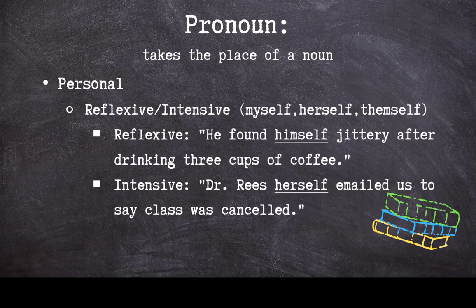Reflexive or intensive pronouns refer back to a noun that's come earlier in the sentence. These are created by adding 'self' or 'selves' to the end of the objective pronouns my, your, our, her, him, it, or them. Reflexive pronouns are used to clarify meaning, as in 'he found himself jittery after drinking three cups of coffee.' 'Himself' clarifies who he found jittery.